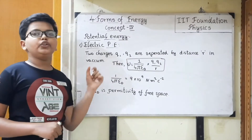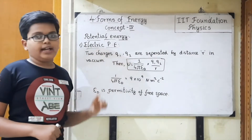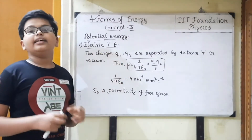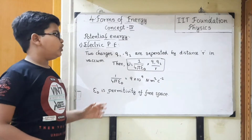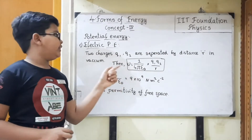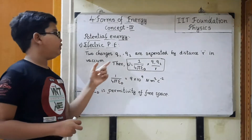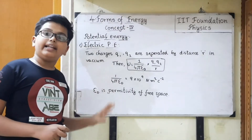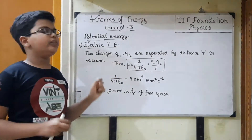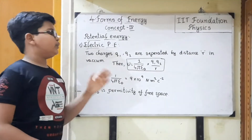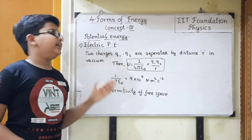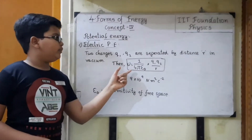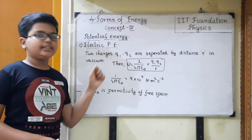When these two charges are like — meaning they are both positive or both negative — then the force is repulsive in nature, so the electric potential energy is positive. When these two charges are unlike, they attract each other, so the potential energy is negative. It depends upon the charges.